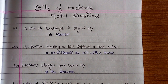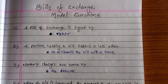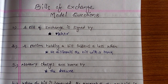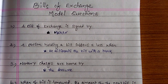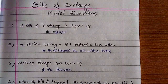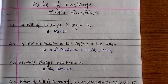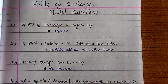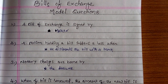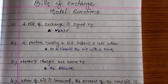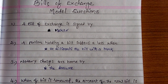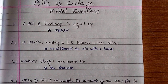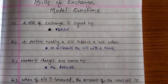First one: a bill of exchange is signed by the maker. So, whoever wrote the bill — that party who signed is called the maker or drawer.